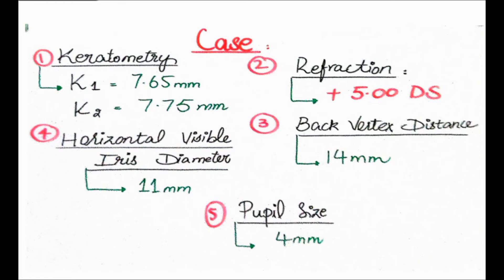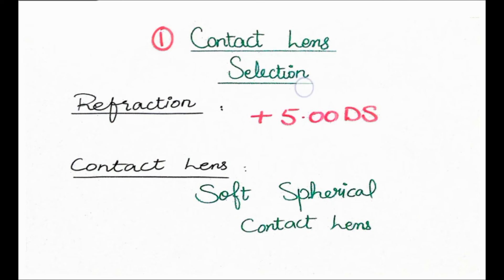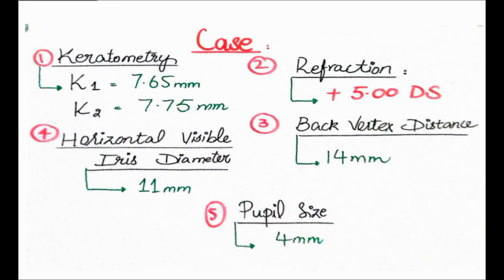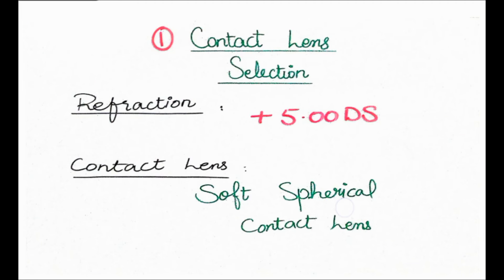Before calculating the contact lens parameters, the first step is to determine which type of contact lens the patient needs. According to the patient's refractive error, you select either soft or hard contact lens. Since the patient has a simple refractive error - hypermetropia with spherical correction of plus 5 diopters sphere, which falls within the minus 20 to plus 20 diopter range - you can select a soft spherical contact lens. No other type is needed.